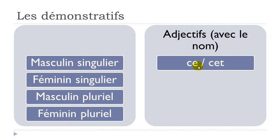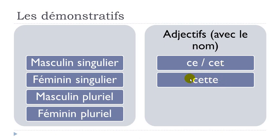For the masculine, 'this' will be translated in French with 'ce' — that's the basic form — or 'cet'. You will have to use 'cet' when the noun after starts with a vowel or an H followed by a vowel. Remember, this H letter in French is not really pronounced, so it indicates that when a word starts with the sound of a vowel, you use 'cet'.